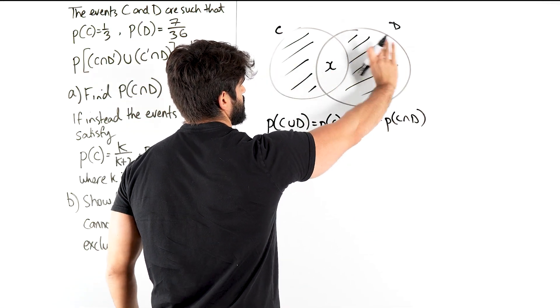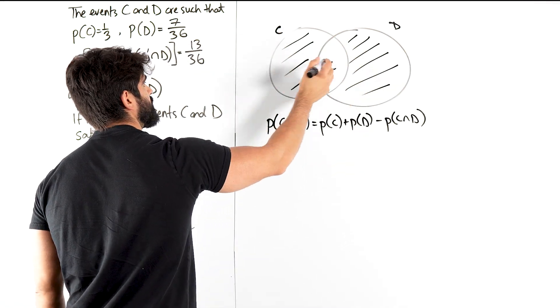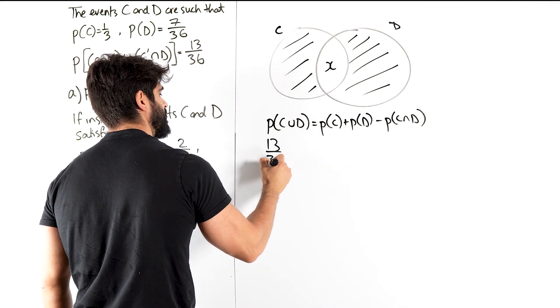C or D is all of this shaded, all of this whole thing. Now we know this shaded bit is 13 over 36. We just need to add X.